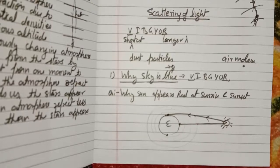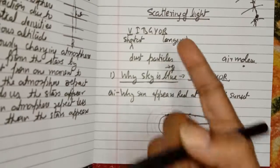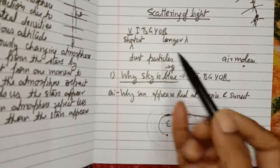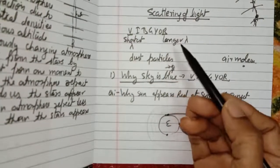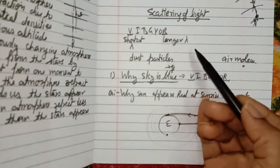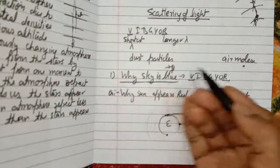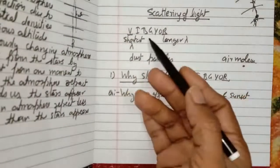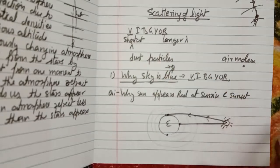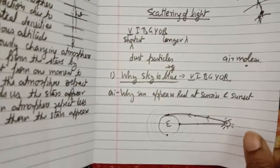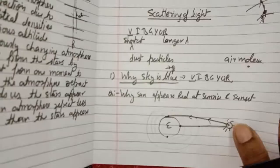Another question: why are danger signals red in color? Since red light has a longer wavelength, it is not scattered. Because it does not scatter, it can travel a large distance compared to other colors. That is why danger signals use red color light.